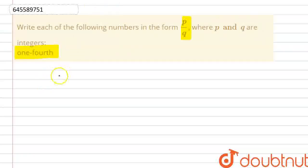One-fourth means 1 out of 4. That means 1 divided by 4. And how can we write it in the fraction? Like 1 by 4.